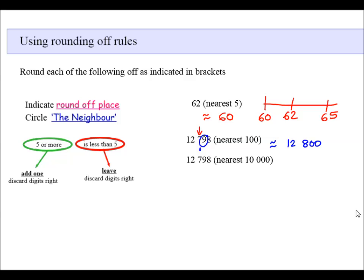Let's round 12,798 to the nearest ten thousand. Once again, those were our ones, these were our unit thousands, these were our ten thousands. So we are rounding off to that value. That's our round off place. We have to circle the neighbor. In this case, the neighbor is less than five. So if we round this number off, it is going to be 12,000 to the nearest ten thousand.